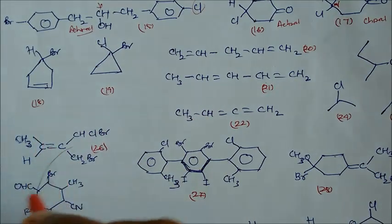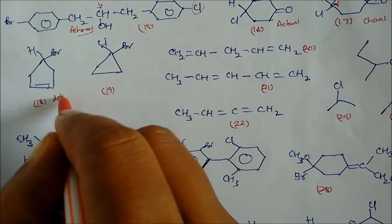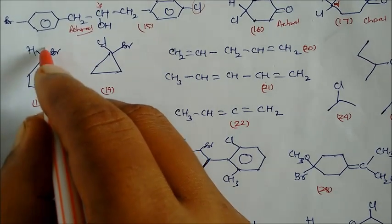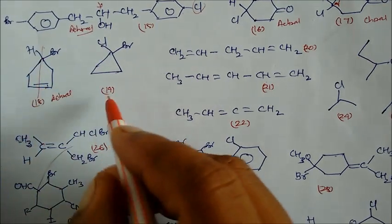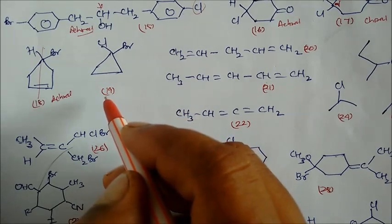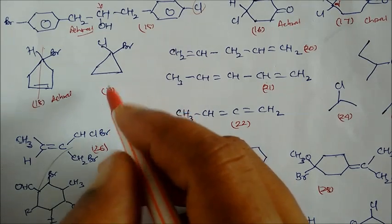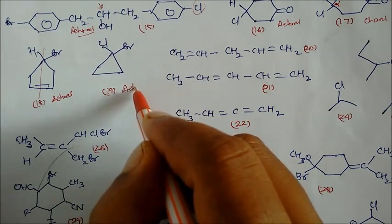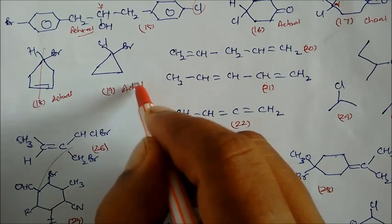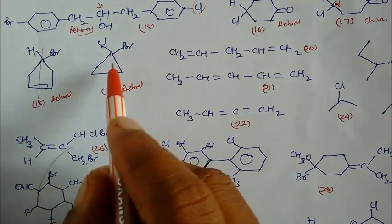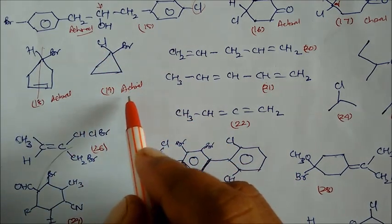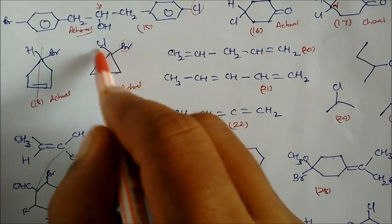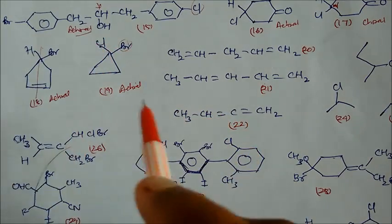Compound 18 is also achiral for the same reason — if you divide here, both sides are equal and symmetric. Compound 19 is also achiral because Cl and Br are almost similar to each other. Keep in mind: Cl and Br are considered almost similar to each other in these cases.